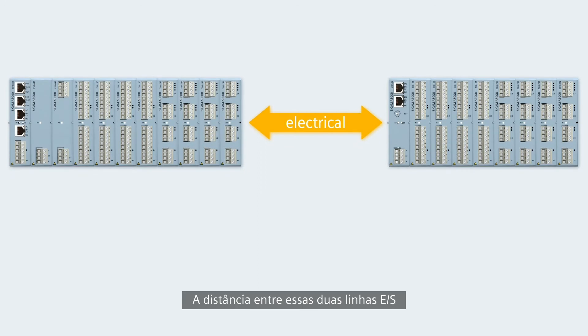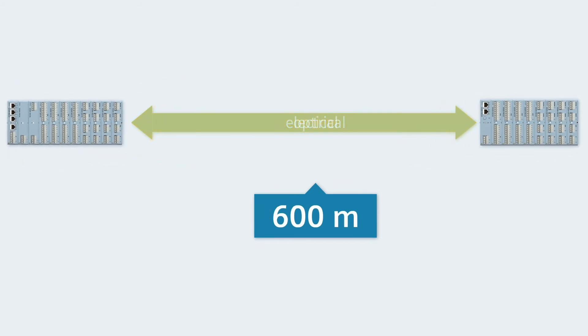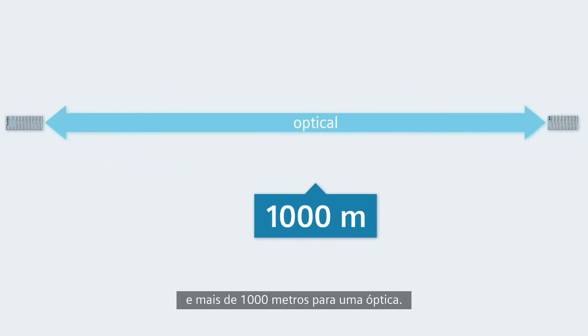The distance between these two I/O lines may be up to 100 meters for an electrical connection, and even more than 1000 meters for an optical connection.